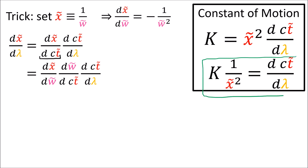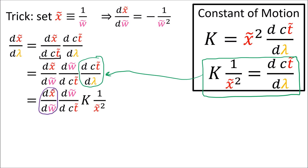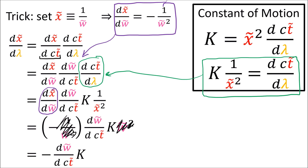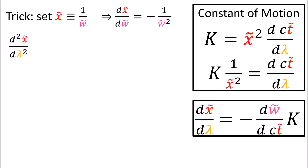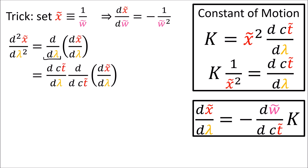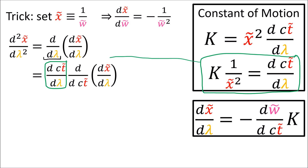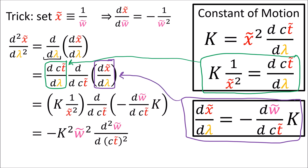We can use single-variable chain rule again to expand in terms of w-tilde. We know from our constant of motion that d(ct-tilde)/d(lambda) is just k times 1 over x-tilde squared, and d(x-tilde)/d(w-tilde) is negative 1 over w-tilde squared. After canceling, we get negative d(w-tilde)/d(ct-tilde) times k. Now let's calculate the second derivative of x-tilde, which is just the derivative of the first derivative we calculated. Expanding d/d(lambda) using single-variable chain rule in terms of ct-tilde, replacing terms using our constant of motion, this becomes the second derivative of w-tilde with respect to ct-tilde, replacing 1 over x-tilde squared with w-tilde squared.